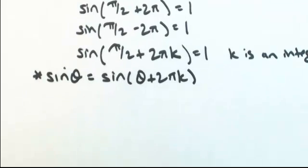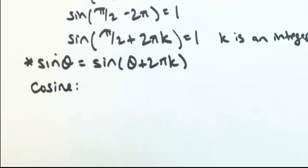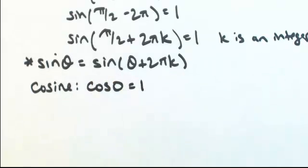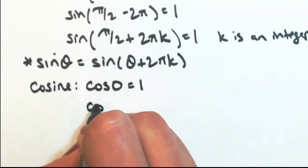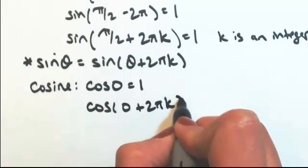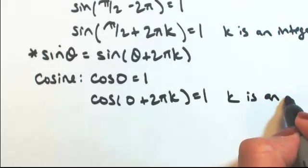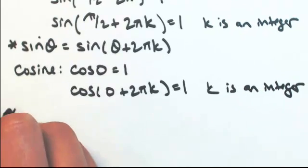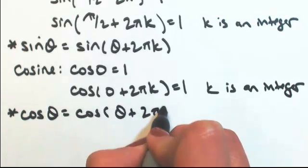We could do the same thing for cosine. Let me start by finding where cosine is 1. That's going to be the right side of the circle, so cosine of 0 is 1. There's not going to be any other place that that's going to happen. So cosine of 0 plus 2 pi k will be 1, where k is an integer. So we could say that the cosine of theta is equal to the cosine of theta plus any multiple of 2 pi.